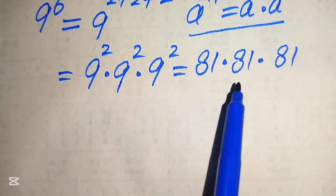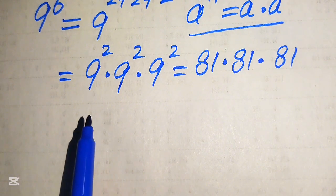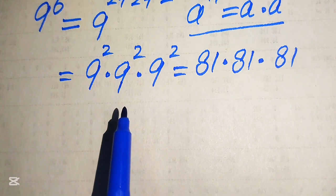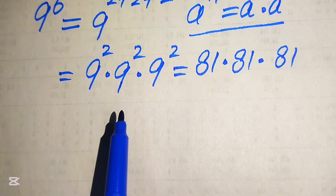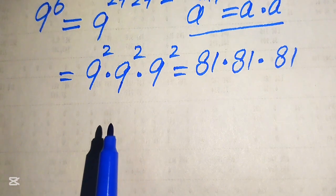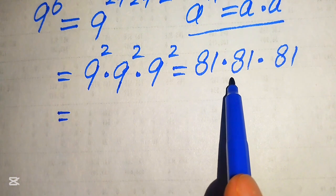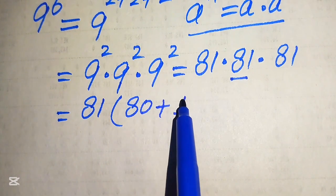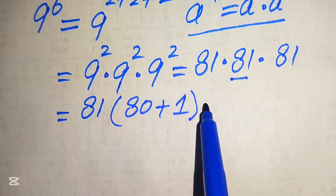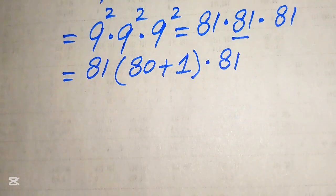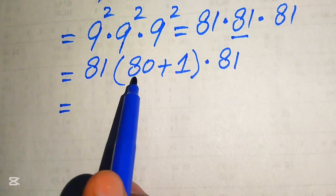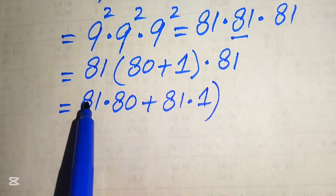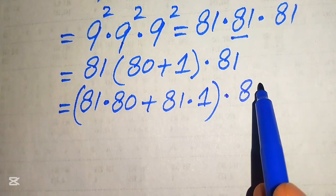Since a calculator is not allowed, I will show each step. We multiply these three 81s by breaking 81 as 80 plus 1. We multiply 81 on both values: 81 times 80 plus 81 times 1, and the resulting answer is then multiplied by the remaining 81.